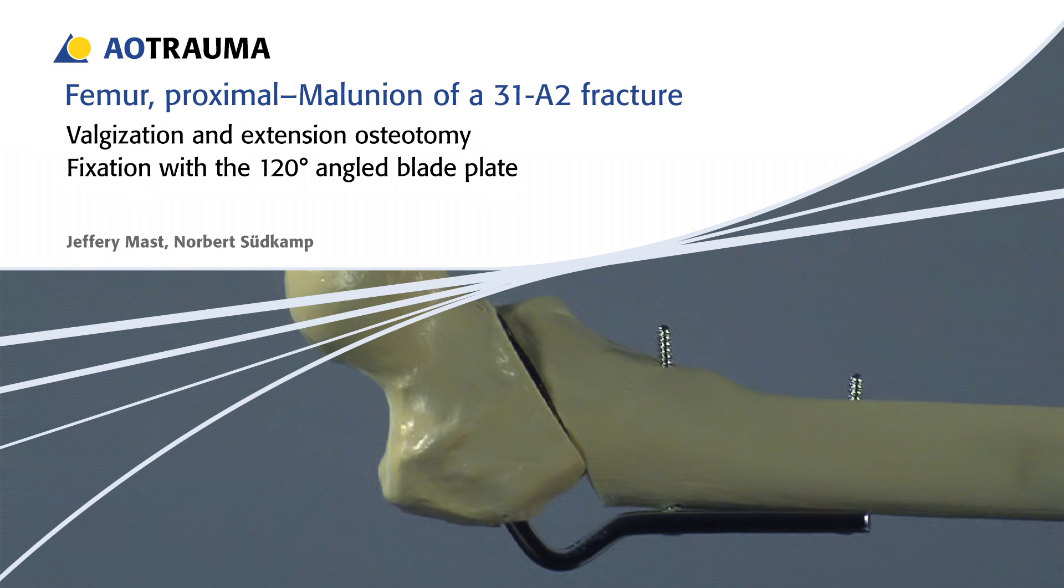In this presentation, a malunion of the proximal femur will be corrected by means of a valgusation and extension osteotomy. The osteotomy will then be fixed with the 120 degree angled blade plate.